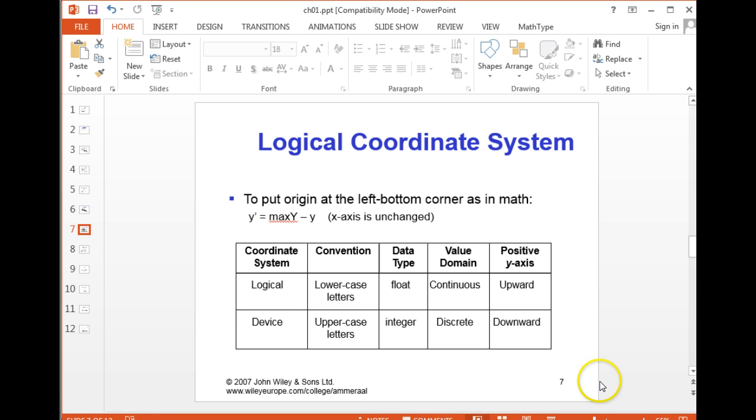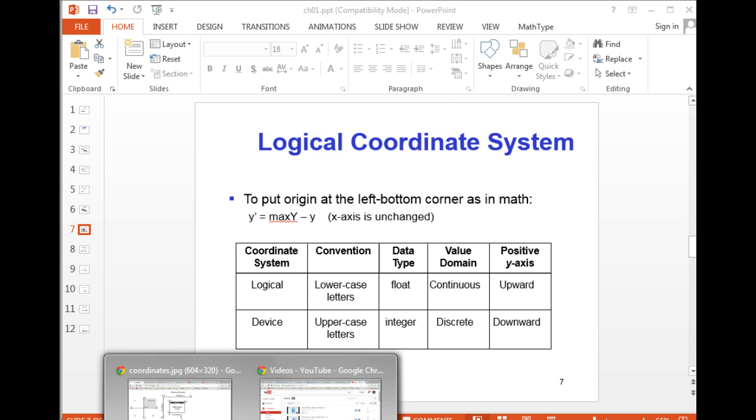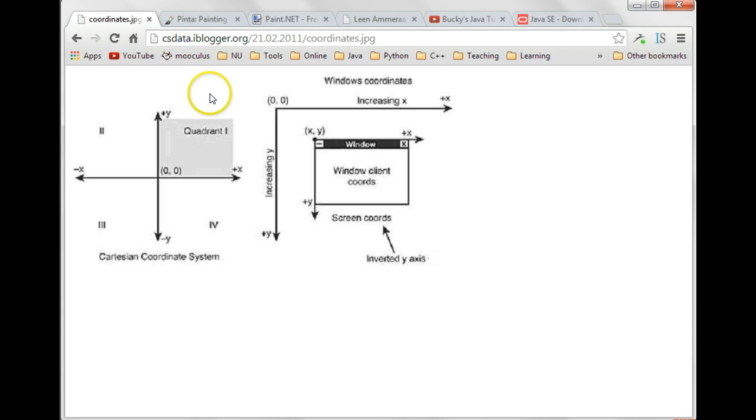We've mentioned before that the logical coordinates are based on the Cartesian coordinate system where we plot real numbers. For quadrant one, the origin is in the bottom left corner. Y values go up in the positive direction, and X values go to the right in the positive direction.